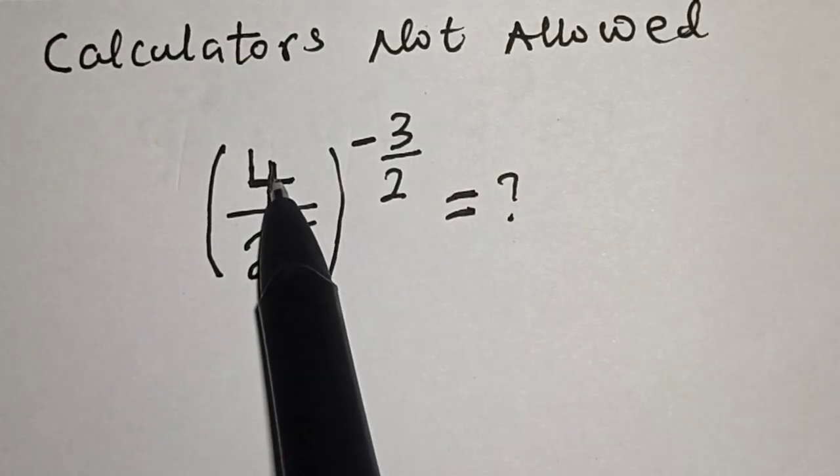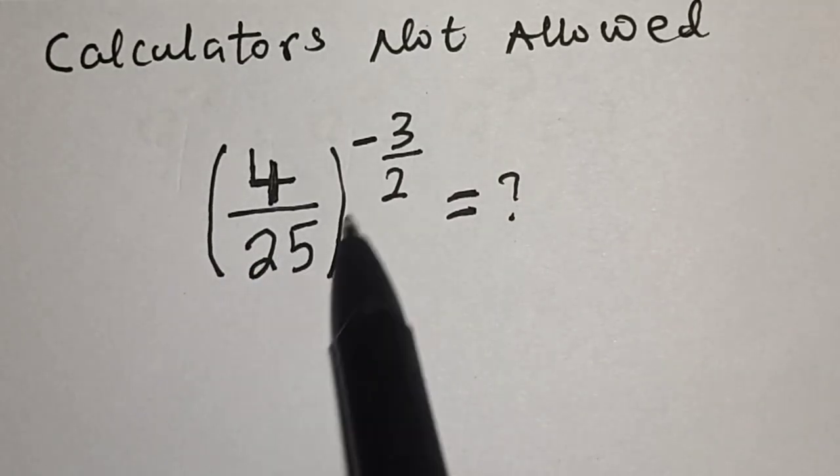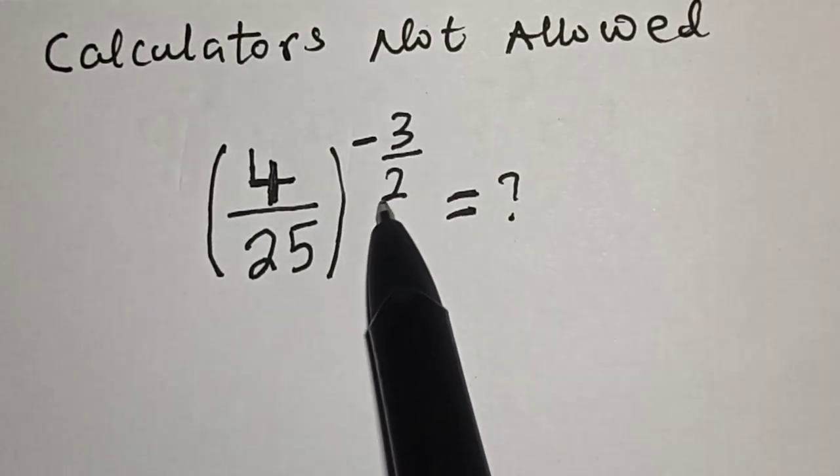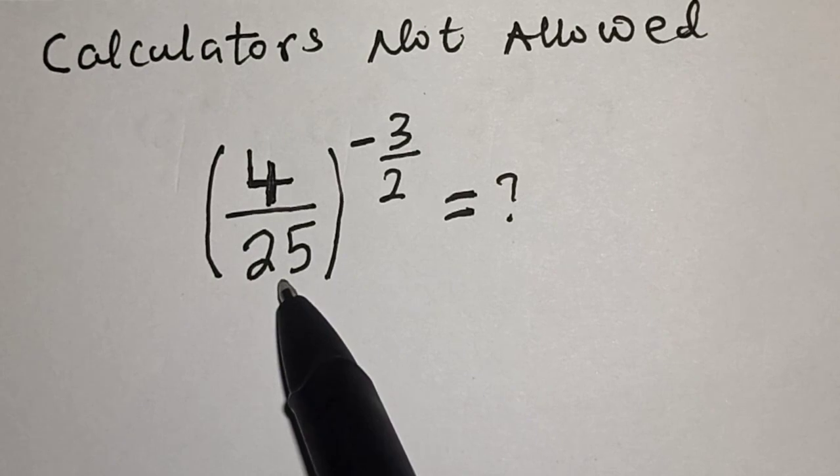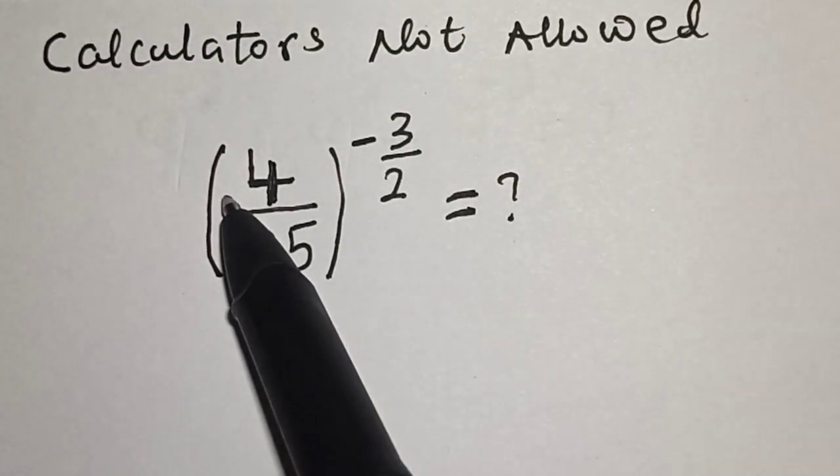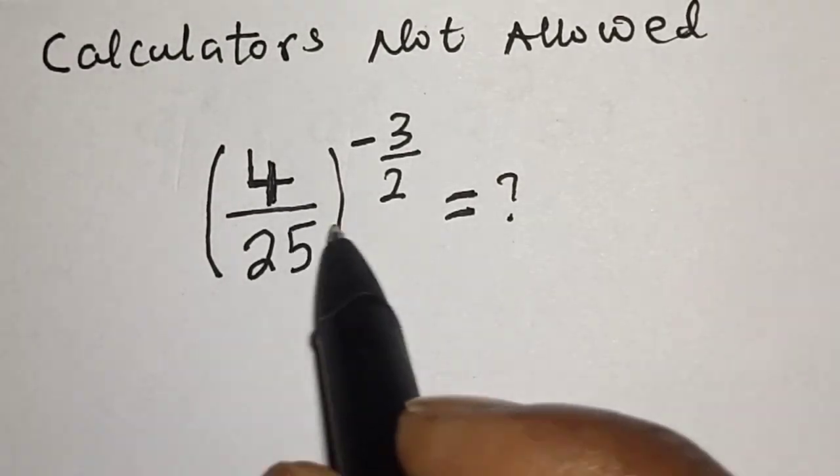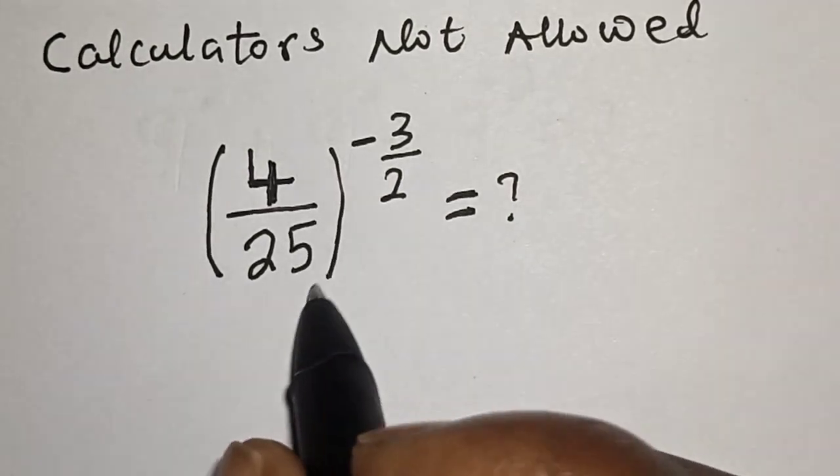Calculators not allowed. 4 divided by 25, raised to the power of minus 3 over 2, is equal to what? Hi everyone, welcome to my class. In this class, we want to quickly simplify this question. But before we proceed, please don't forget to like, share, comment, and subscribe. Thank you.